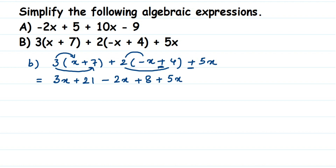Now I'll rearrange and group all like terms together: 3x, then minus 2x, then plus 5x. Then I'll write all the constants together: 21 plus 8. That's it — only two constants.